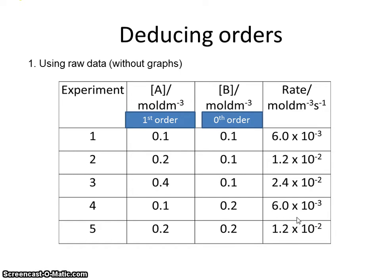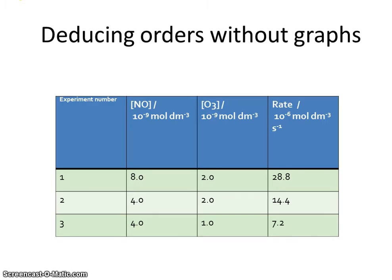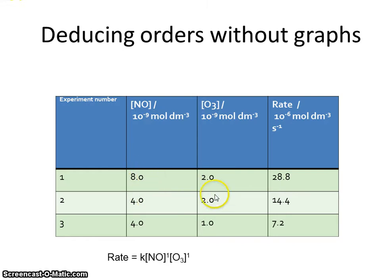Now write down the rate equation for this reaction involving concentrations of A and B. The rate equation should include k[A]¹[B]⁰. You could leave out the B term entirely since it is zeroth order. Here's one for you to do yourself: find the orders with respect to NO and O₃. Comparing experiments one and two, halving NO while keeping O₃ constant also halves the rate — first order for NO. Comparing experiments two and three, halving O₃ also halves the rate — first order for O₃ as well.